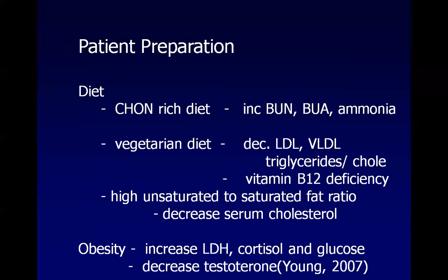Regarding diet, patients who eat a lot of meat tend to have higher levels of blood urea nitrogen, blood uric acid, and ammonia. Vegans or vegetarians tend to have lower levels of lipid profile components such as LDL, VLDL, triglycerides, and cholesterol, but they are noted to have vitamin B12 deficiency.